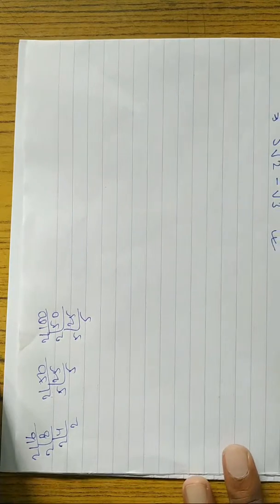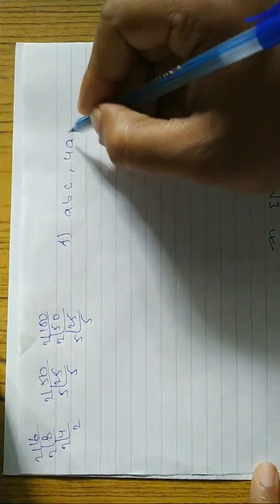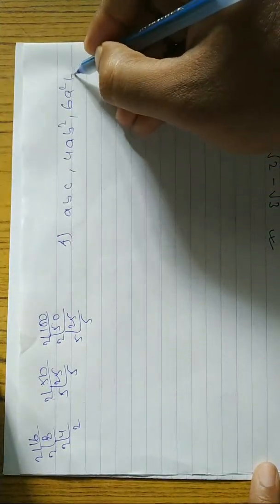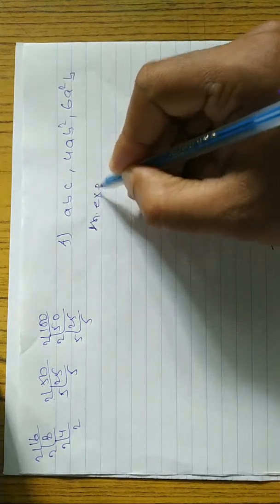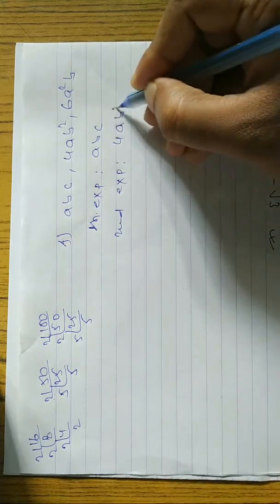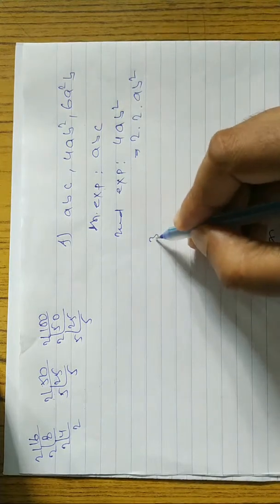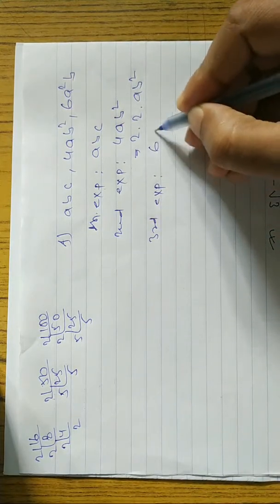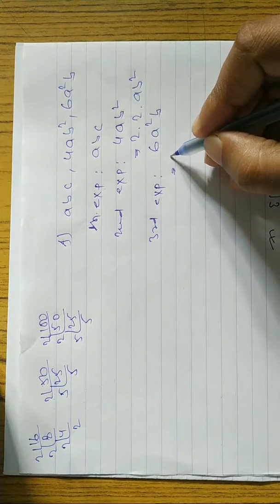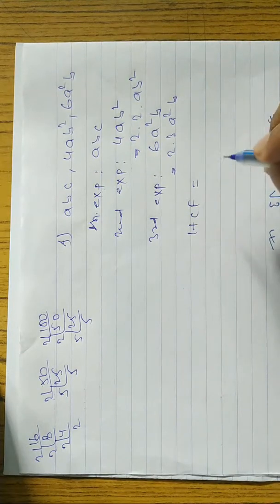Hope you understand question 1e. Now the last one — question 1f. We'll do this and then questions 3 and 4 in the next video. The expressions are abc, 4ab², and 6a²b. First expression abc — no numbers to break, leave it. For 4ab²: 4 = 2 × 2, so write 2 × 2 × a × b². For 6a²b: 6 = 2 × 3, so write 2 × 3 × a²b.